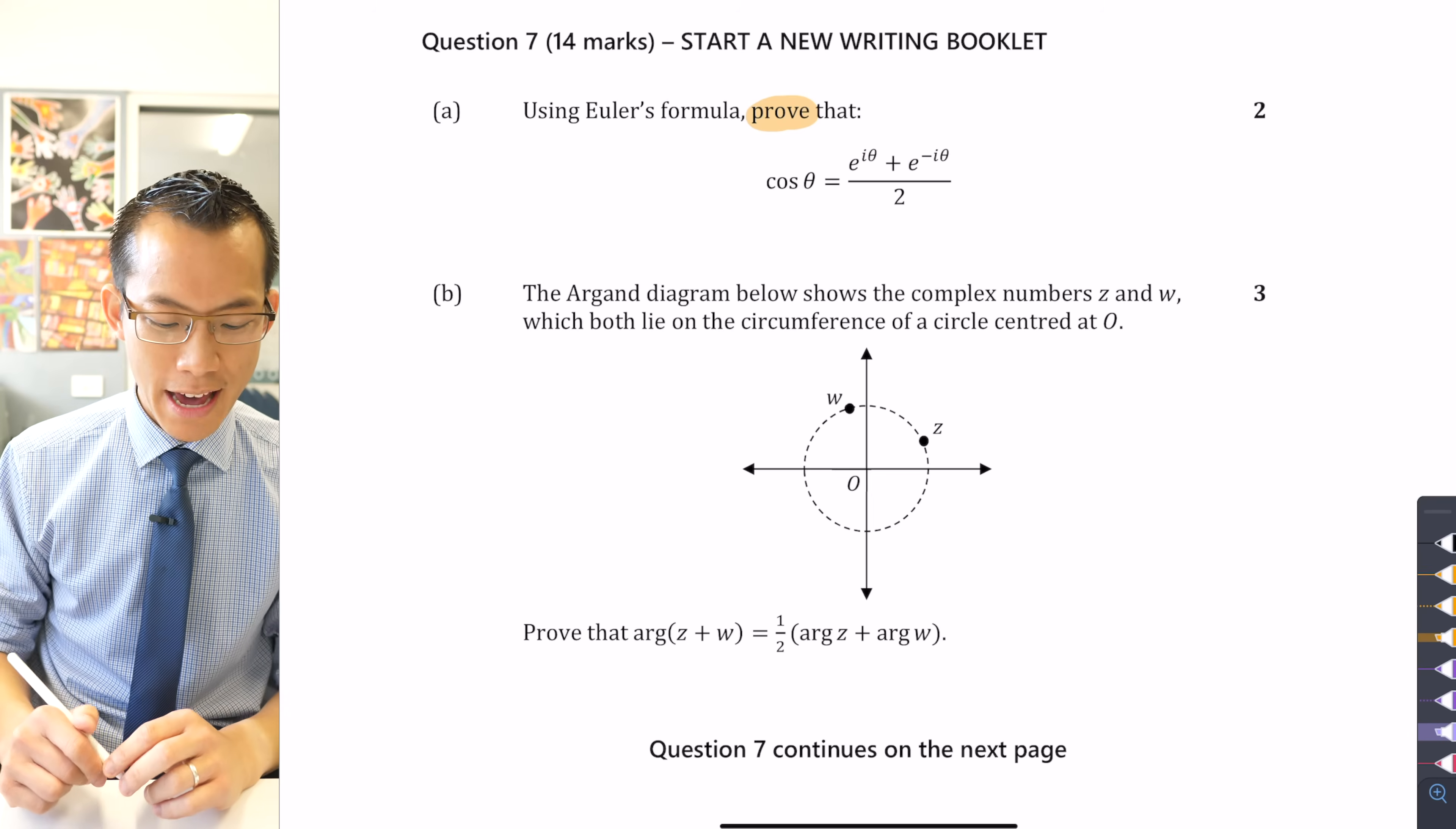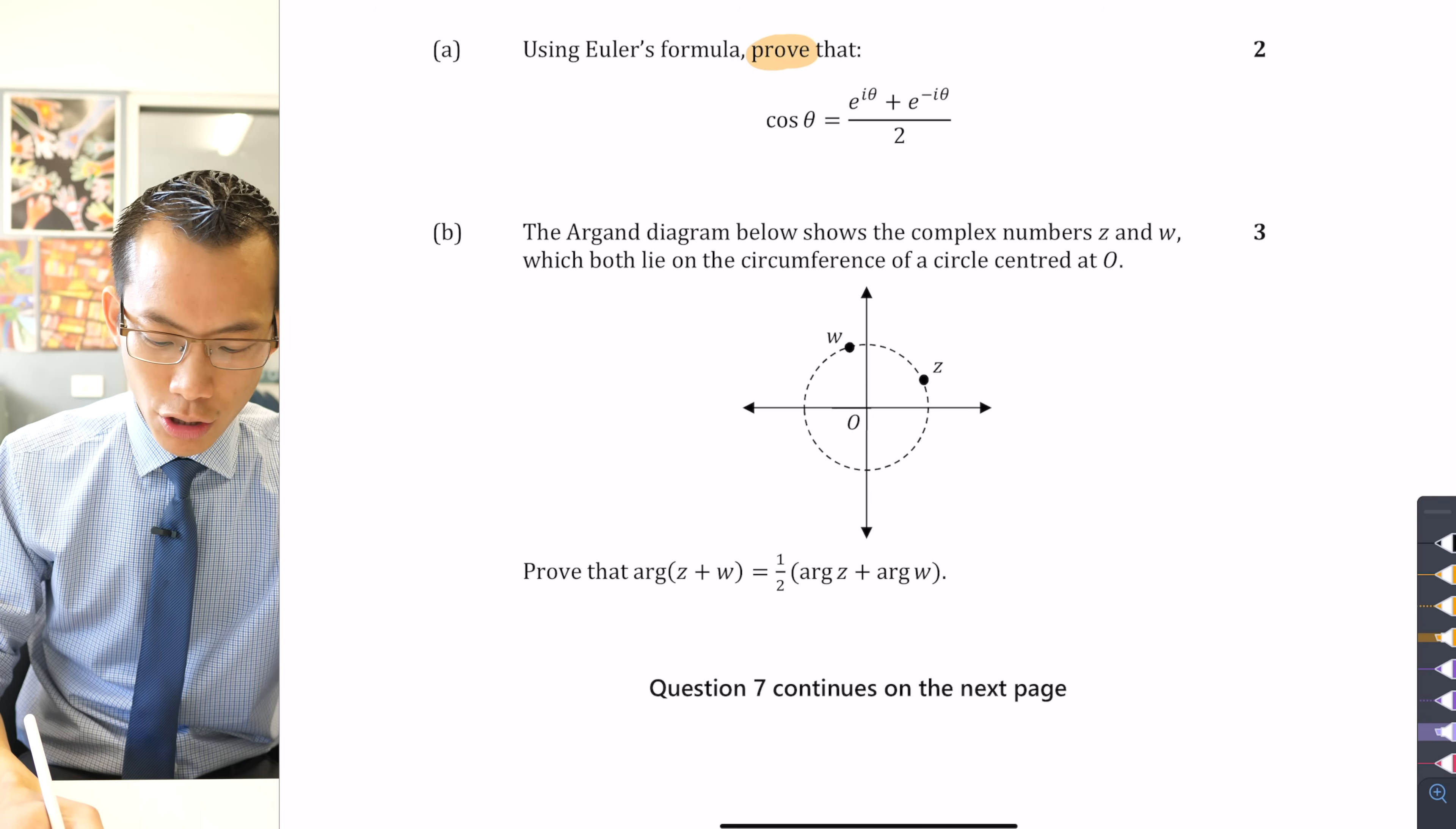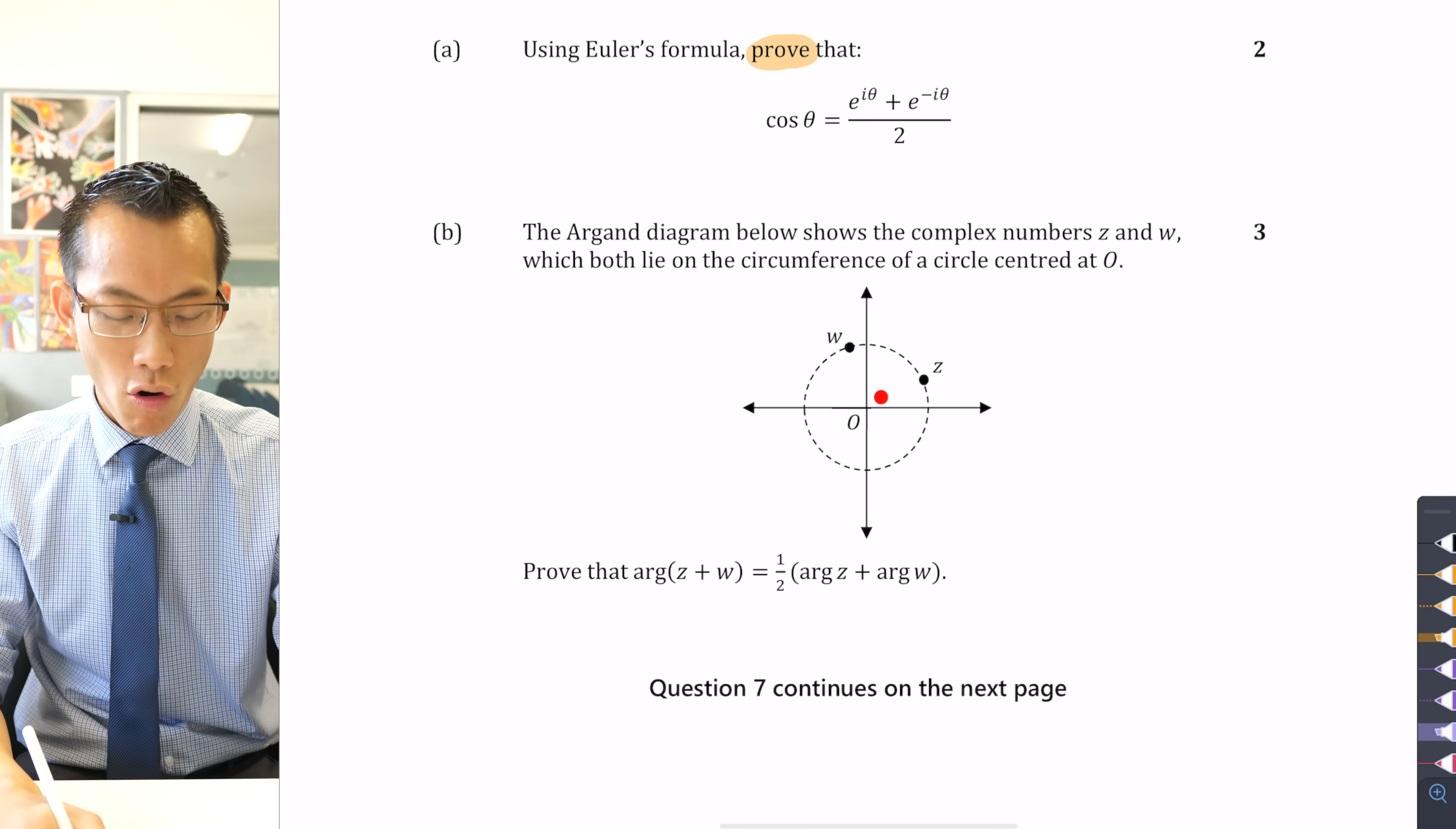Coming back to the paper, let's have a look at part B. This diagram shows two complex numbers, here's z and here's w, and they both lie on the circumference of a circle that is centered at the origin.